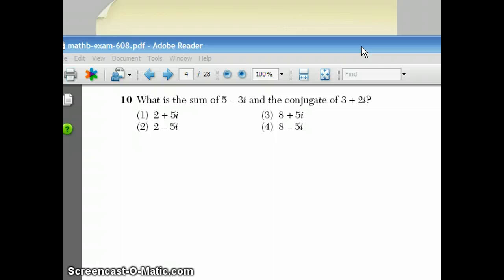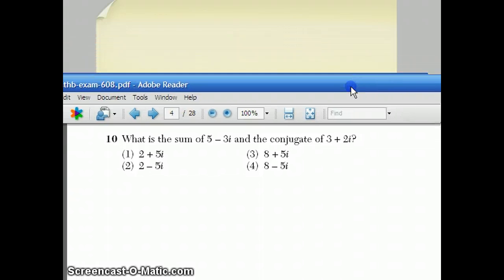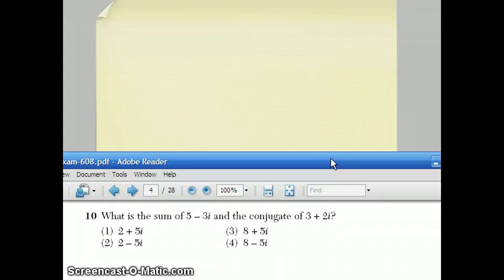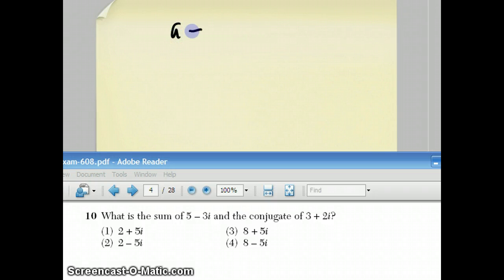Question 10 says, what is the sum of 5 minus 3i and the conjugate of 3 plus 2i? Well, you have to know what the word conjugate means. And the conjugate of a number, a plus bi, the conjugate is going to be a minus bi. And that goes in reverse also. If it was a minus bi, it would become a plus bi.